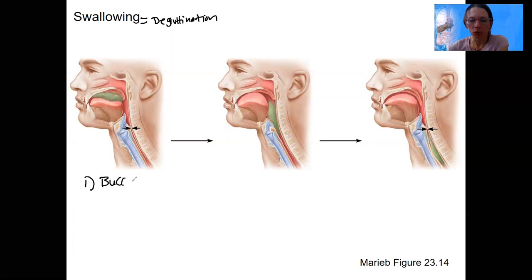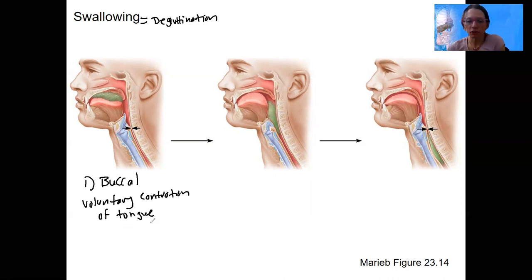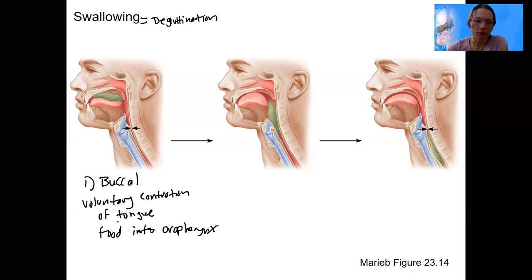Step one is the buccal phase. Buccal refers to mouth. This is voluntary, mostly involving contraction of the tongue. You can feel your tongue pushed back, pushing that food — that bolus — back against the hard palate and forcing that food into the oropharynx. So we're going from the oral cavity to the oral pharynx. This is step one, the buccal phase, and it's consciously controlled. You control when you're going to swallow.